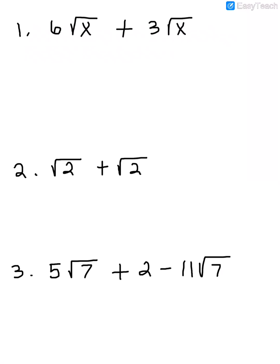In number one, we have 6 square root of x plus 3 square root of x. Since they both have a square root of x, these are like terms, so we can just add or subtract the coefficients. When we combine these two terms, we get 9 square root of x. The square root of x part stays the same — we only add or subtract the numbers in front, the coefficients.